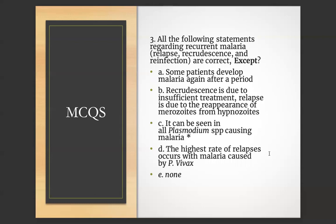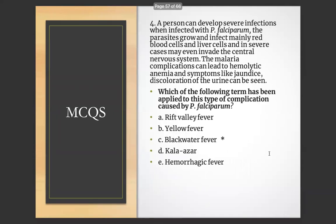MCQ 3: All of the following statements regarding recurrent malaria, recrudescence, and reinfection are correct except — A) Some patients develop malaria again after a period. B) Recrudescence is due to insufficient treatment; relapse is due to reappearance of merozoites from hypnozoites. C) It can be seen in all Plasmodium species causing malaria. D) The highest rate of relapses occurs with malaria caused by P. vivax. E) None. Answer: C — it can be seen in all Plasmodium species causing malaria.